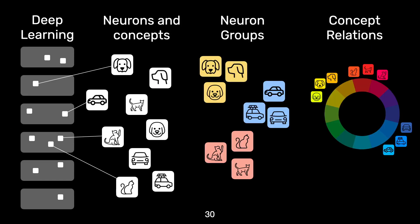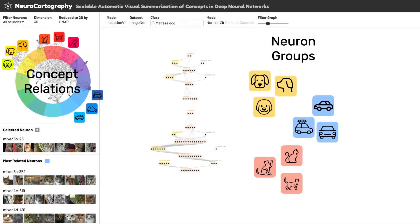To wrap up: NeuroCartography automatically discovers concepts represented by neural networks and finds which neurons can detect such concepts. NeuroCartography groups neurons based on semantic similarity of their concepts to provide better organized interpretation. NeuroCartography shows the relationships between the concepts of the neurons and groups to provide a global view of the concepts learned by the models. NeuroCartography's multiple views implement such interpretation on the models.